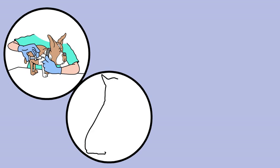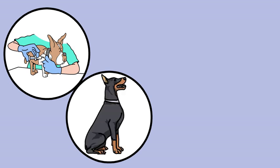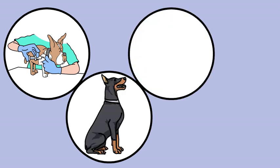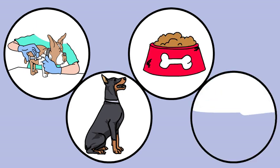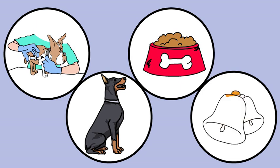Pavlov stumbled upon classical conditioning while studying digestion in dogs. Initially investigating salivatory responses to food, he noticed that the dogs began to salivate not just to the presence of food but also to the stimuli associated with it, such as the sound of a bell.